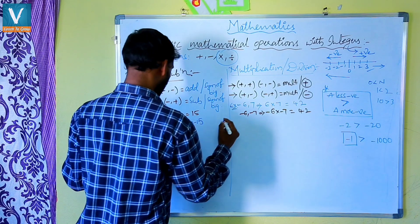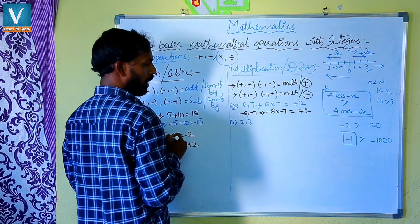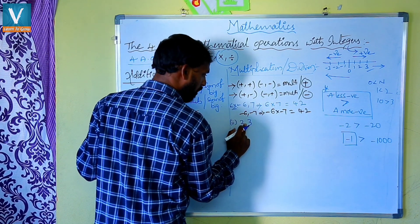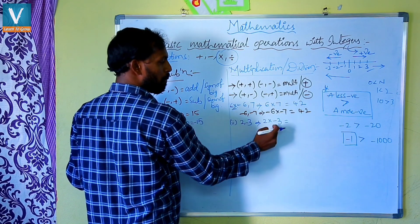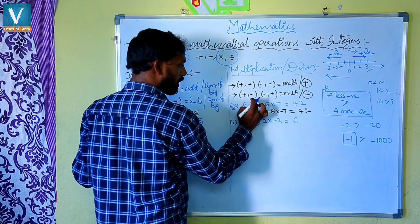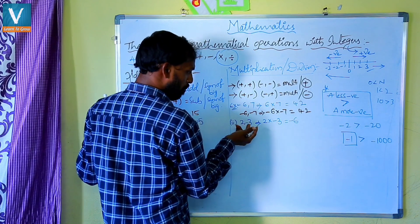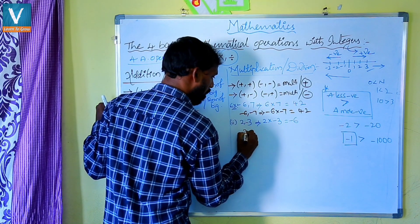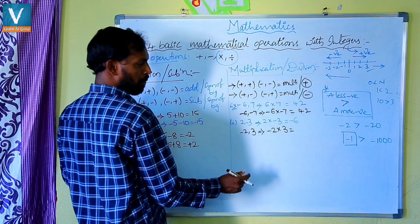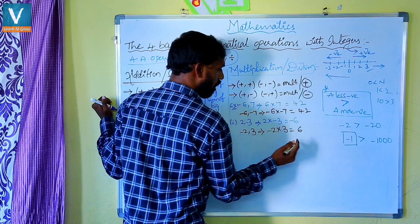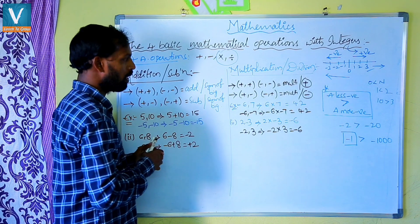Now alternate symbols. Taking 2 and 3: first is positive, second is negative. This implies 2 into minus 3. First we multiply: 2 threes are 6. Plus into minus is minus, so the answer is minus 6. Changing symbols: minus 2 and plus 3. This implies minus 2 into 3. First multiply: 2 threes are 6. Minus into plus is minus, so the answer is minus 6.